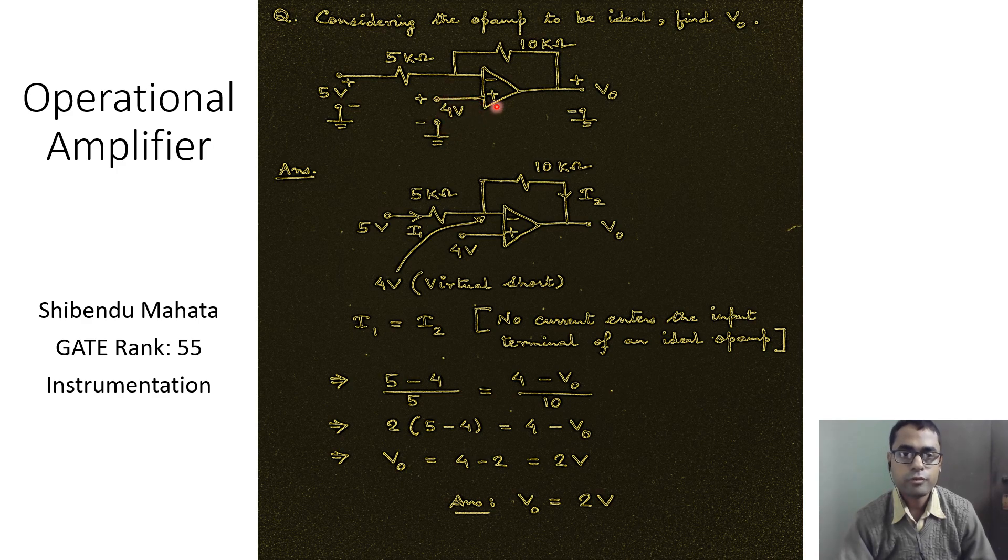the non-inverting input terminal is 4 volts, and we are interested in finding out V_naught when the connection to the inverting input terminal is provided with a supply of 5 volts and there is a negative feedback.